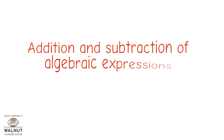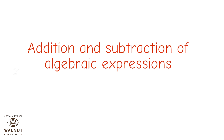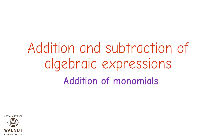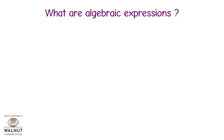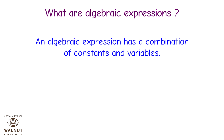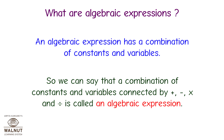Addition and subtraction of algebraic expressions — addition of monomials. An algebraic expression has a combination of constants and variables. A combination of constants and variables connected by plus, minus, multiplication, and division is called an algebraic expression.